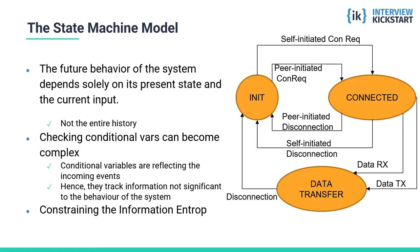Once data transfer starts, the machine is in the 'data transfer' state. From the data transfer state it can disconnect, which puts it back into the unconnected state. The memoryless property is exhibited by the fact that when in the connected state, the machine doesn't know whether it entered that state by its own initiation of a connection request or by the peer's initiation. Similarly, in the data transfer state it doesn't matter whether data reception or data transmission was initiated. What matters for transitions is the current state and the nature of the event.